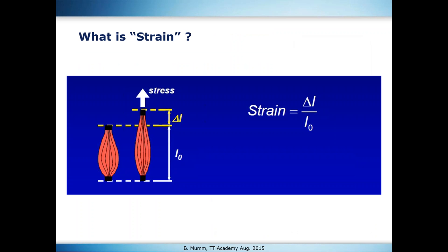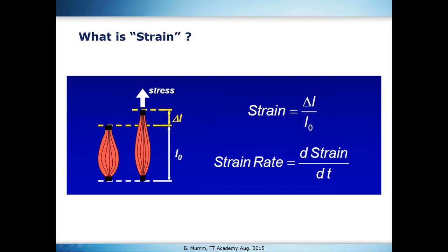Strain is quite simple. It is the deformation or lengthening of a myocardial fiber or muscle fiber. On this example, you see the delta of the length of the fiber between its original length L0 and the extended or shrunken length, divided by the original length — that is the strain. The strain rate is then simply the change of strain over time.